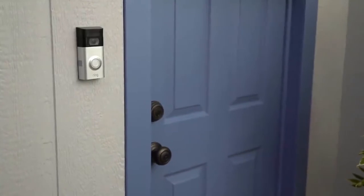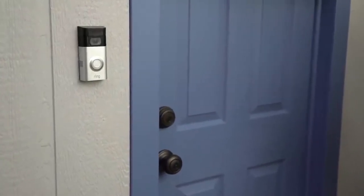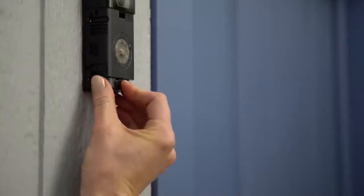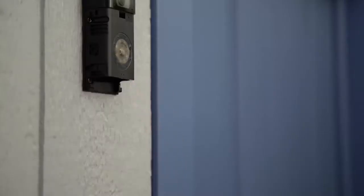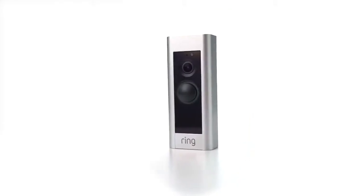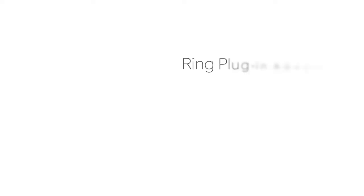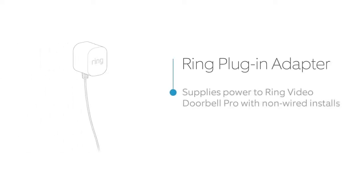If your home does not have a wired doorbell system, you may want to consider using a Ring Video Doorbell 2, which is powered by a rechargeable battery. However, if you don't have a wired doorbell but still want the next level features and sleek look of Ring Video Doorbell Pro, you can install a plug-in adapter to supply the power it needs. To order, visit ring.com/accessories.